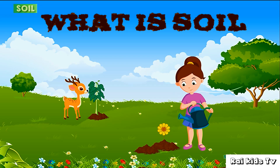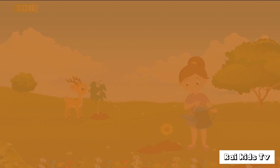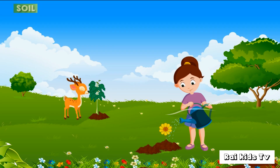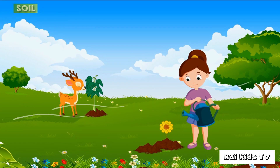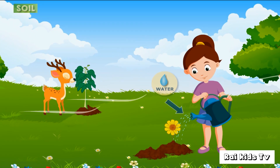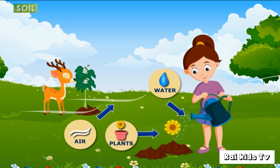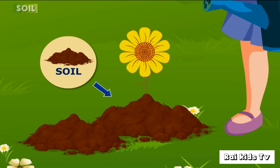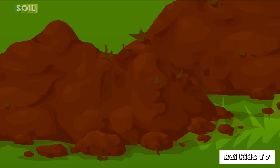What is soil? A natural resource is something that is found in nature and can be used by all living organisms on earth. For example, water, air, plants, animals, etc. Soil is also an example of a natural resource. Let us learn about soil in detail.